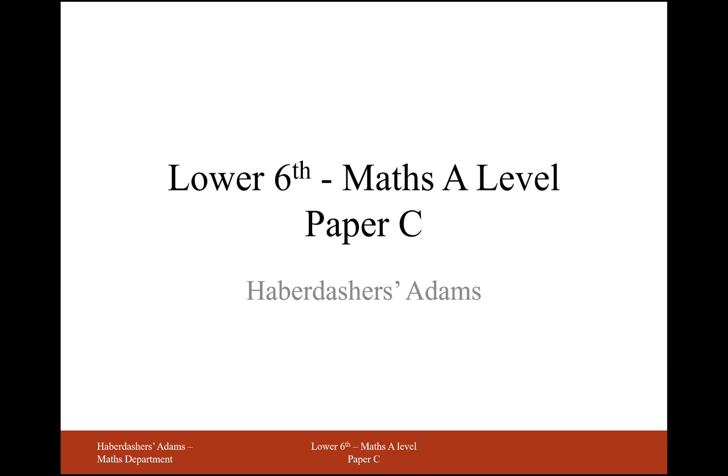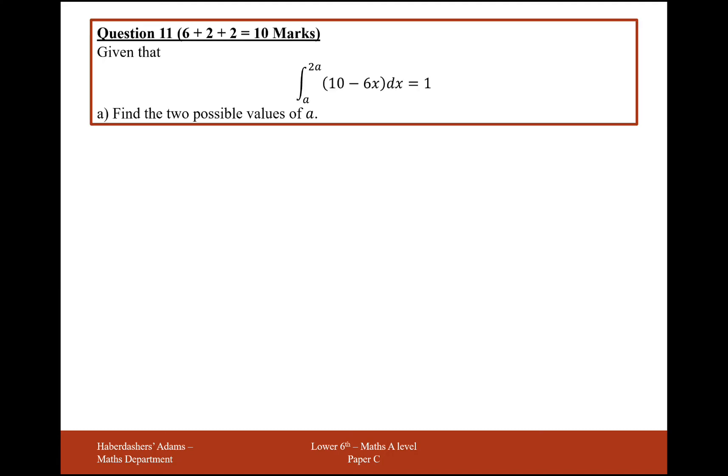Hello there and welcome to Lower Sixth Maths A Level Practice Paper C. Here we're working on question 11, an integration question. Given that the integral from 2a down to a of 10 minus 6x dx equals 1, find two possible values of a.